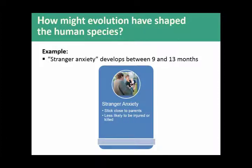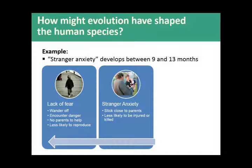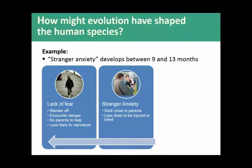Here we have a baby displaying stranger anxiety — the new stranger wants to hold the baby, but the baby's clinging to mom. Why do all babies do this? Well, those babies who do are much less likely to be injured or killed. If you just go off with whoever, or toddle away from your parents, you're going to have a higher probability of death. So it's beneficial that babies act that way. Those kids who wander off are much less likely to get their genes into the future.